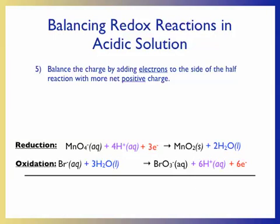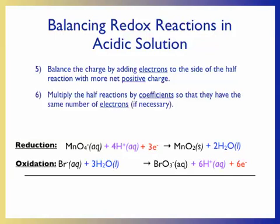Before we recombine the half-reactions, we need to make sure the total number of electrons transferred is equal in both. We can do this by multiplying one or more half-reactions by a coefficient so they have the same number of electrons. For our working example, we multiply the first half-reaction by two, giving a total of six electrons transferred — six electrons lost in oxidation and six electrons gained in reduction.